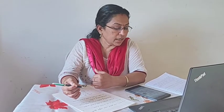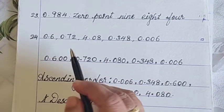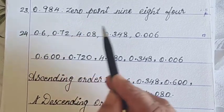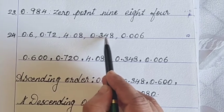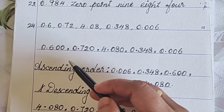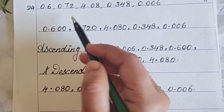Next number, 24th. Arrange the following decimals in ascending and descending order. Decimal numbers are given here. Arrange it in ascending and descending order. I will tell you what are the steps to follow before arranging in ascending and descending order. The numbers are 0.6, 0.72, 4.08, 0.348, 0.006. This is the question. We have to arrange in ascending and descending order.